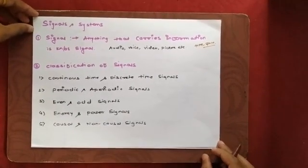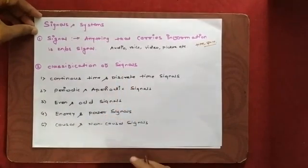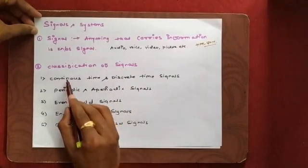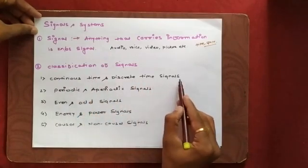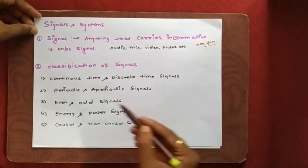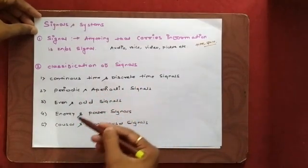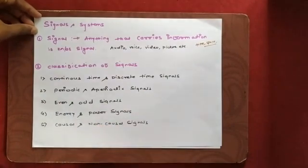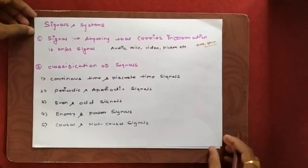Now let us start with the next point — classification of signals. Signals are basically classified in two forms: one is known as a continuous time signal and the other is known as a discrete time signal. They are then again classified into either periodic or non-periodic continuous time signals, and we will see them one by one in the next two videos.